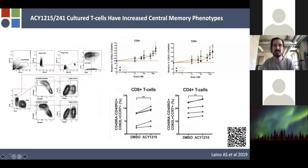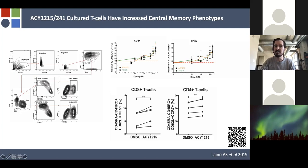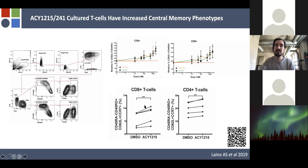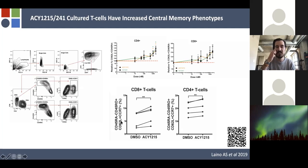Continuing to profile T cell effects with these compounds: when cultured long-term with these inhibitors, T cells showed increases in central memory phenotypes. Looking at CD62L, CD45RA, CD45RO, and CCR7, there was dose-dependent increases in the central memory phenotype in both CD4s and CD8s. In tumor-infiltrating lymphocytes harvested from metastatic melanoma patients and expanded using the clinical protocol of high-dose IL-2 over weeks, spiking in ACY-1215 resulted in the same increased central memory phenotype.